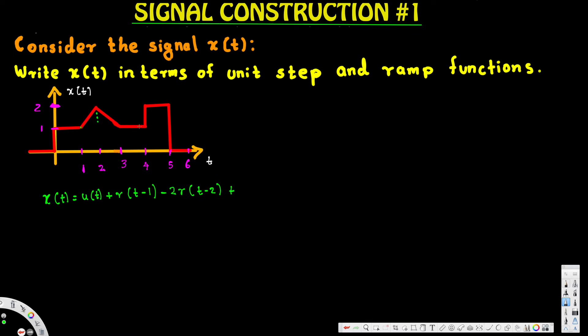Looking at the next part: this is not a unit step function. A unit step function requires a straight up or straight down jump, but here after the ramping function arrives this is a straight line — not a direct drop or direct jump. So we have to write this one in terms of a ramp function: r(t - 3), shifted three units to the right.